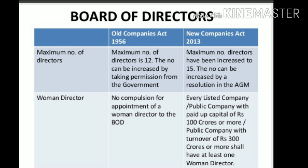Another difference is the Board of Directors. In the old Companies Act, the maximum number of directors was 12, and an increase required permission from the government. Under the Companies Act 2013, the maximum number of directors has been increased to 15, and the number can be further increased by a resolution at the Annual General Meeting.